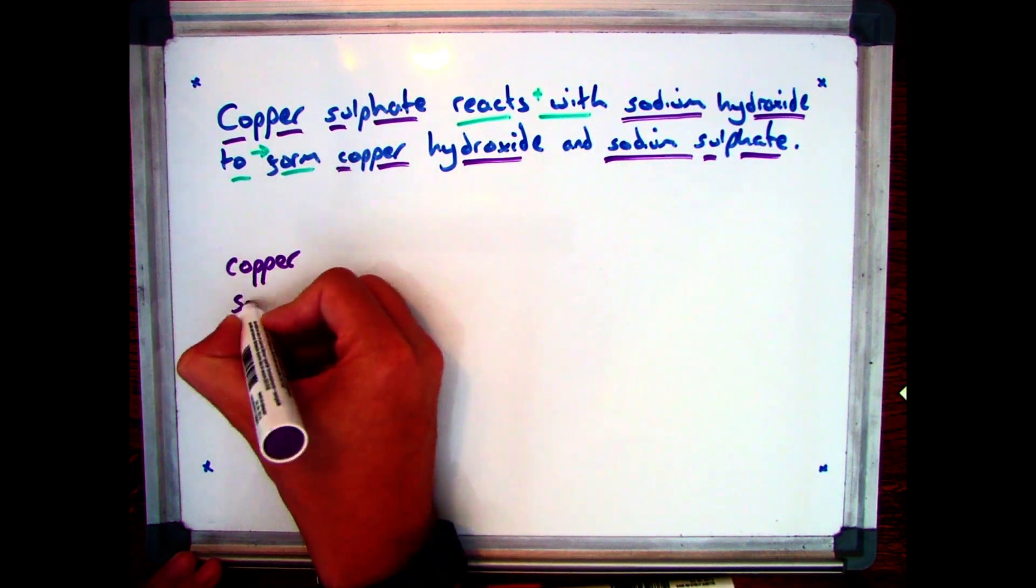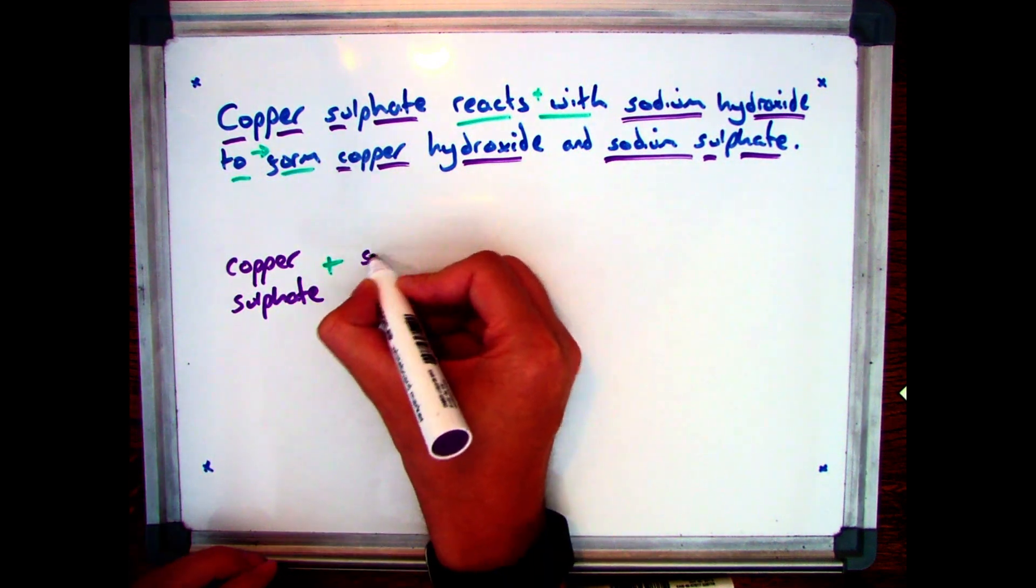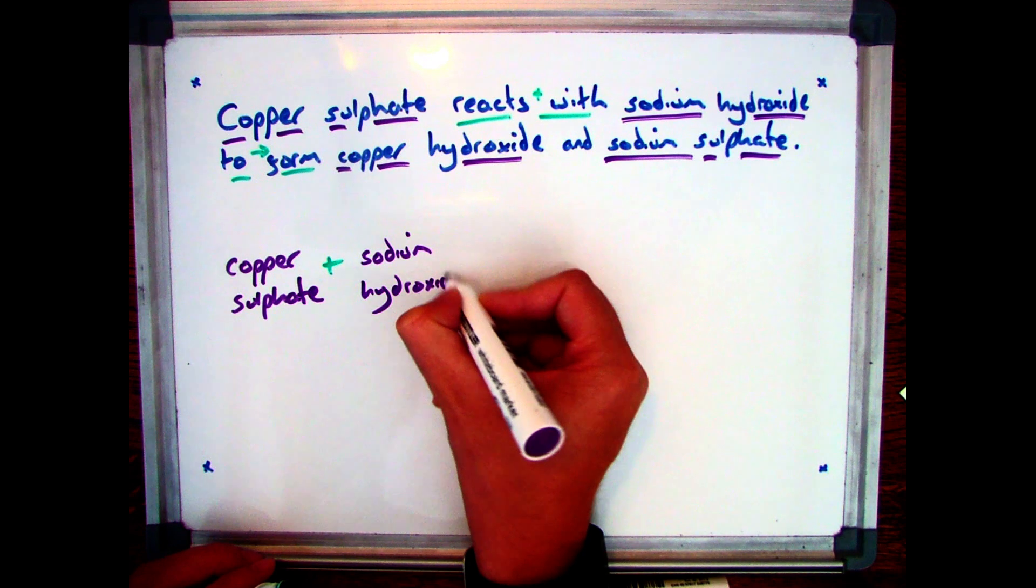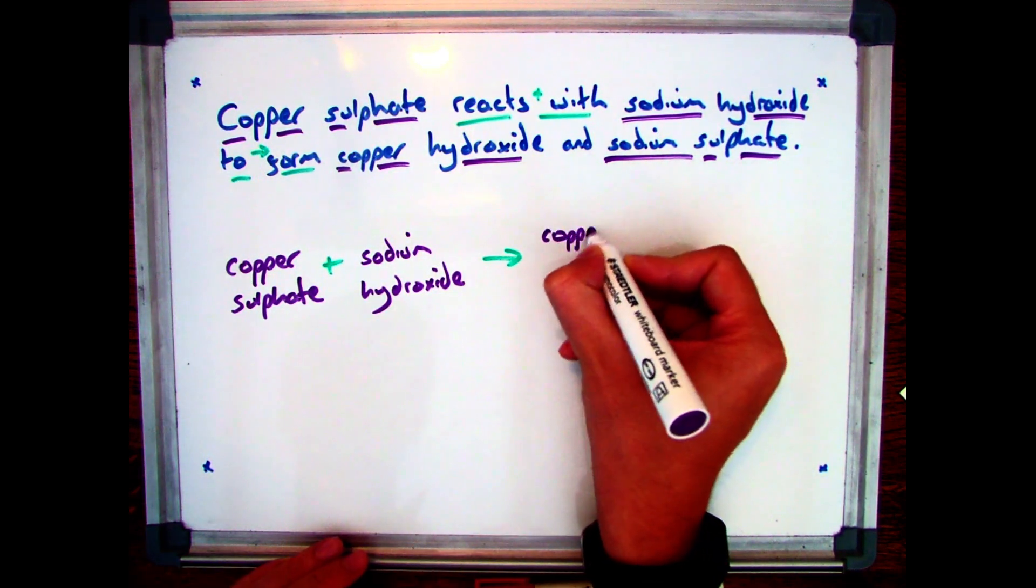And as you can see, I've put in my pluses and my arrows where I gave the descriptors before. So we're starting off with copper sulfate. We're reacting that, so I'll put my plus in with sodium hydroxide. I've then got to form, so I put an arrow in.